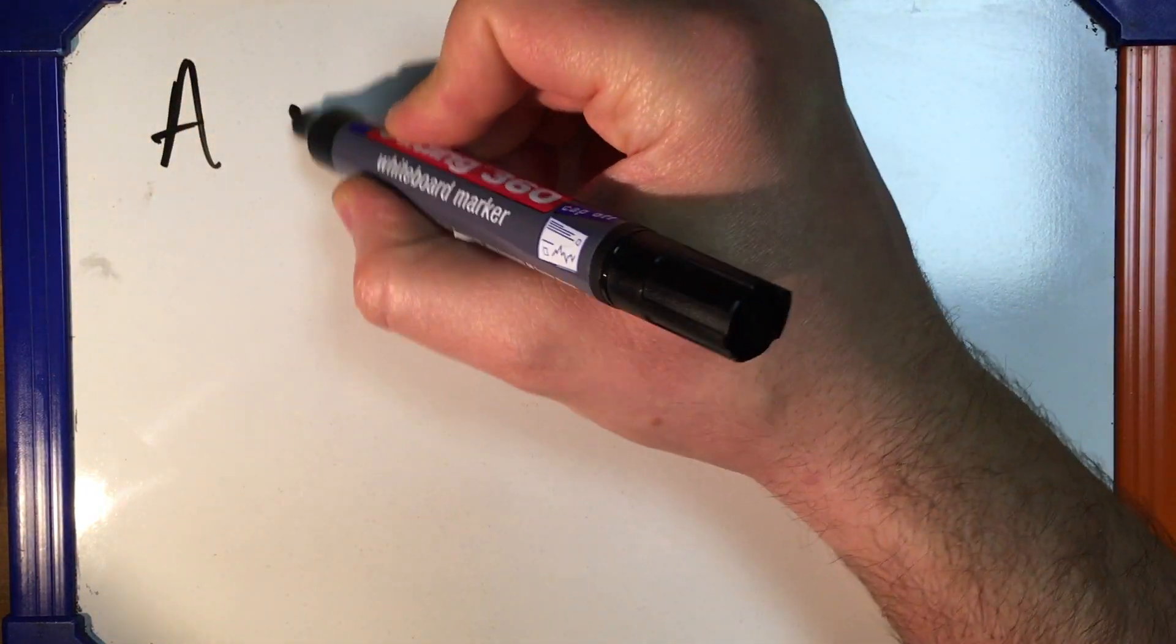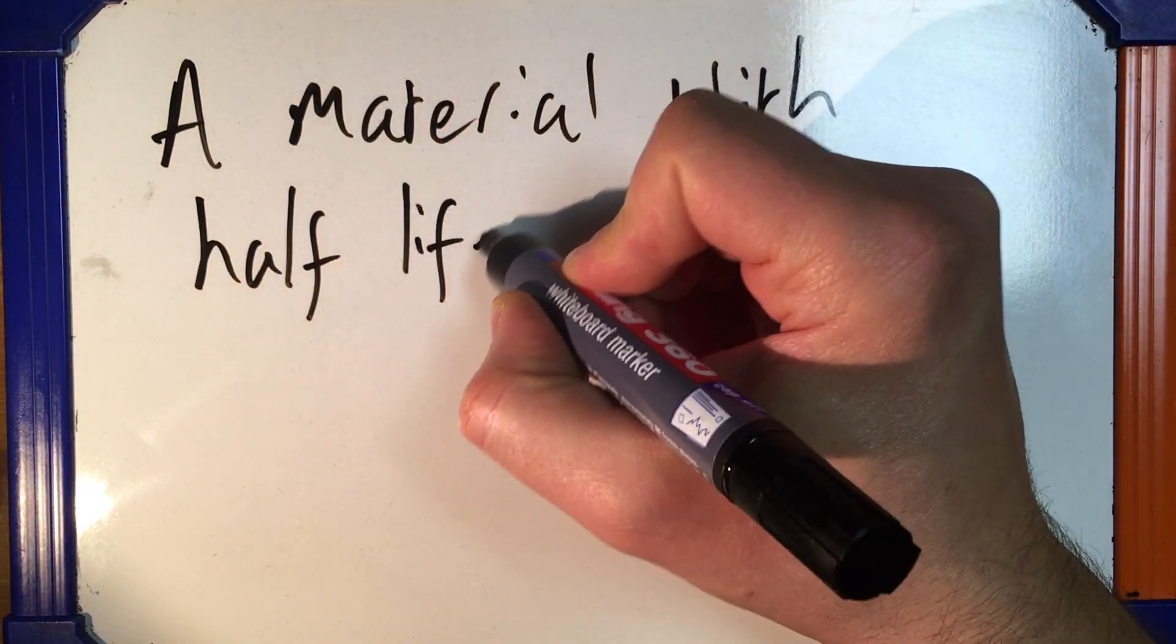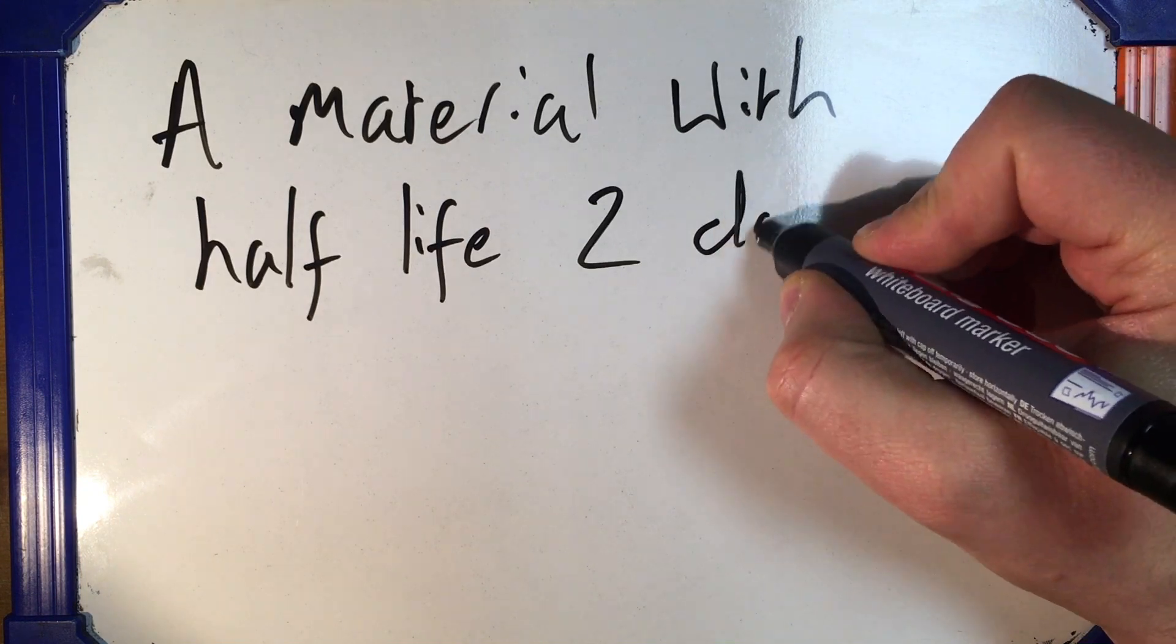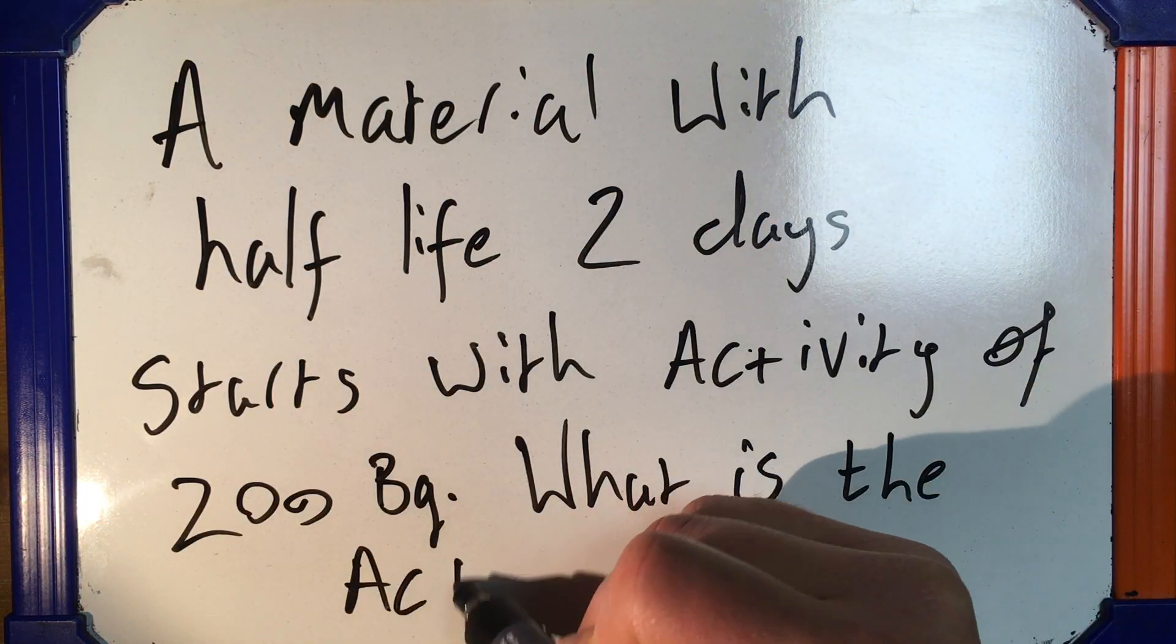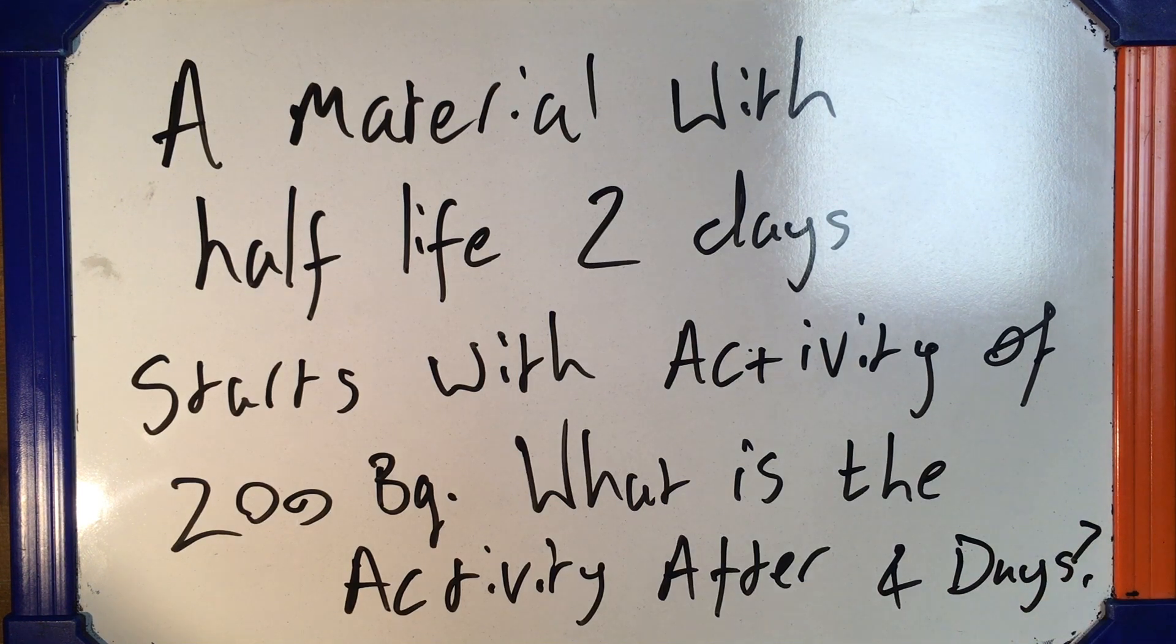Let's do an example question. If we've got a material with a half-life of 2 days and it starts with an activity of 200 becquerels, what is the activity after 4 days? Pause the video and have a try.